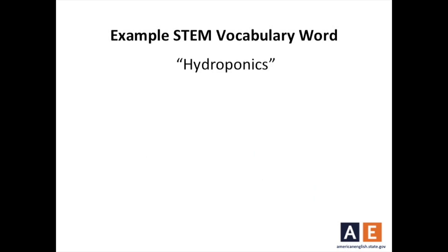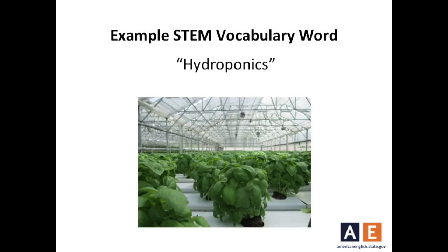Let's look at an example STEM vocabulary word: hydroponics. Many STEM words originally come from Greek or Latin. Hydroponics means growing plants in water, not soil. Hydro means water, and ponics comes from the Greek word pon, which means to labor or to work.